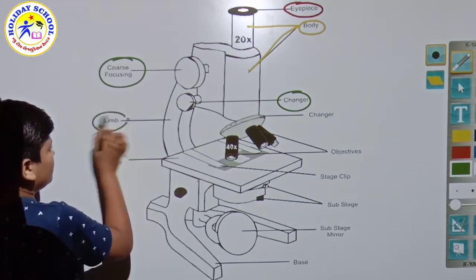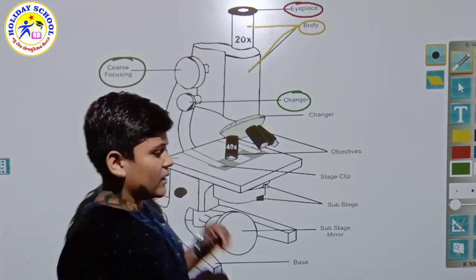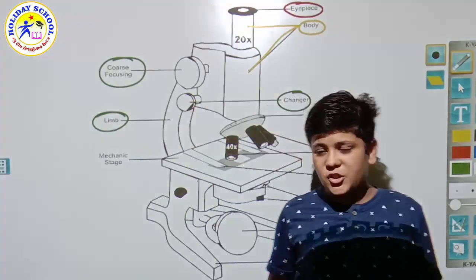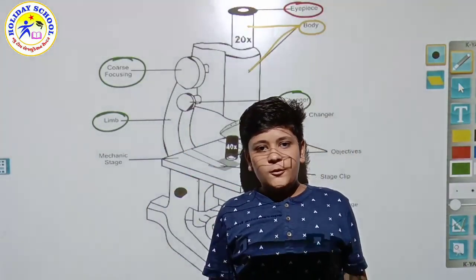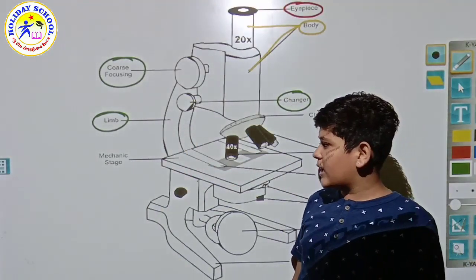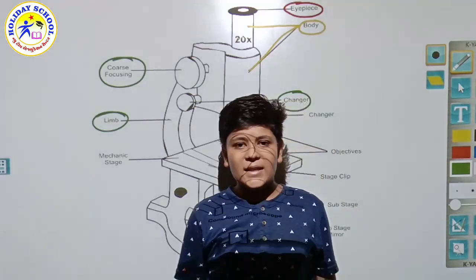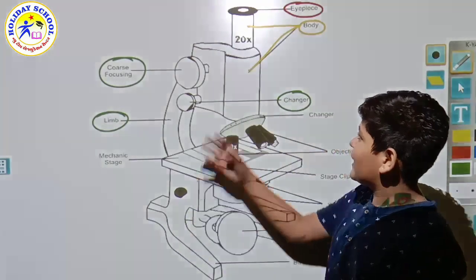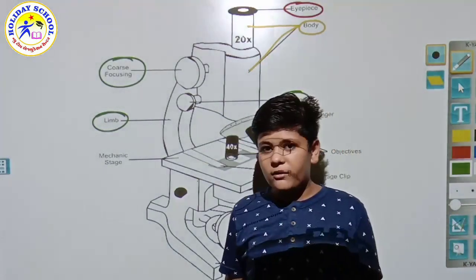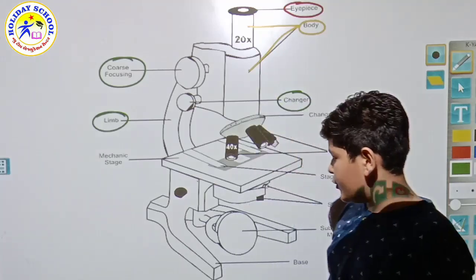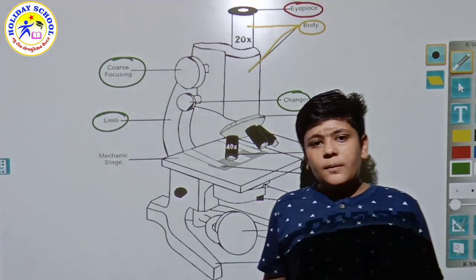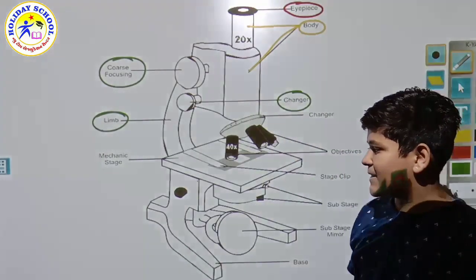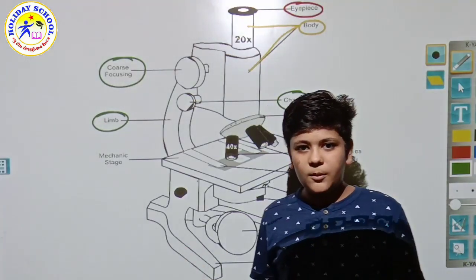This is the limb. The limb is a handle-like structure. You can see here, friends, the work of the limb is to handle it easily. If you handle at the bottom part, the body will damage if it falls. If you hold at the base, it will also fall and damage. So the limb is given to handle the microscope.